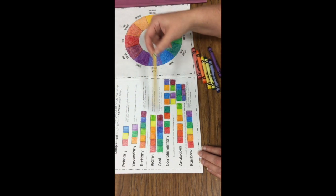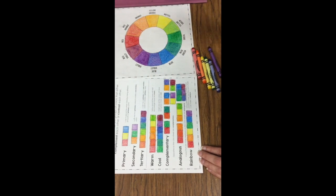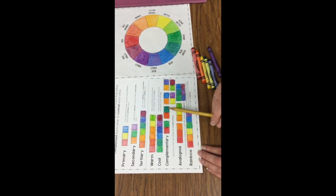which means colors that are across from each other on the color wheel. Red and green, red orange and blue green,